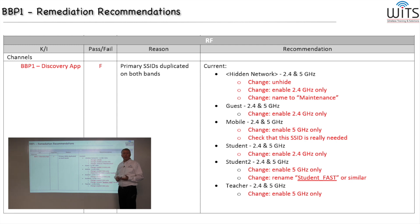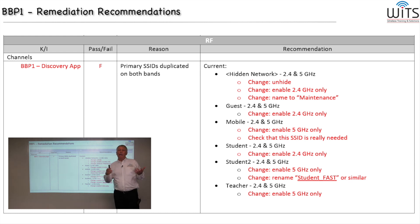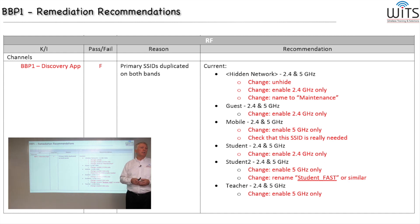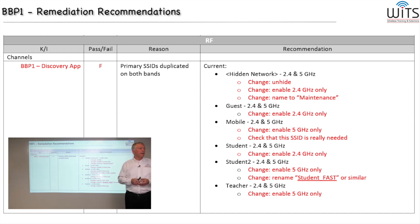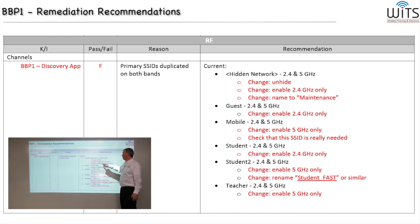Next we look at the hidden network SSID — an old form of security still used by some organizations. It's present on both 2.4 and 5 GHz, and we recommend changing that. After asking the customer, we found out this hidden network is only used once or twice a year — spring and fall — when reconfiguring devices. It's a maintenance SSID, so we recommend unhiding it and making it 2.4 GHz only.